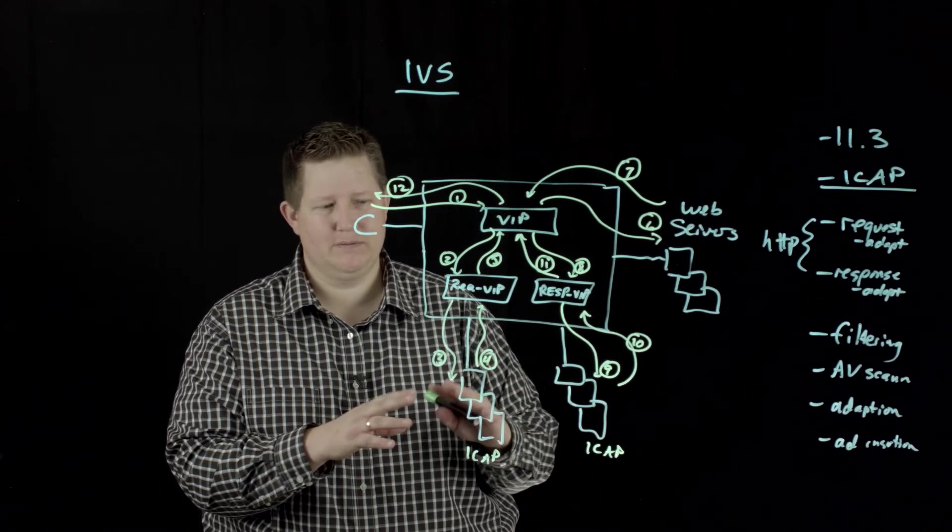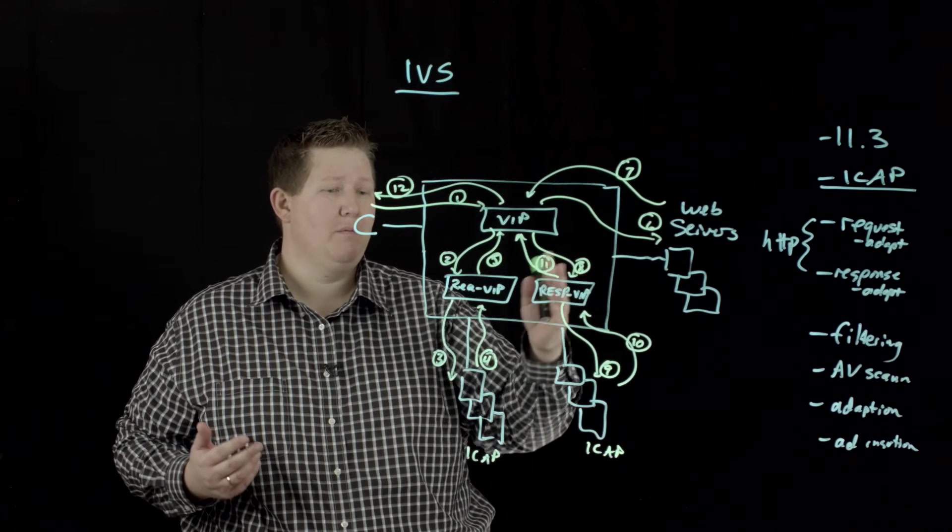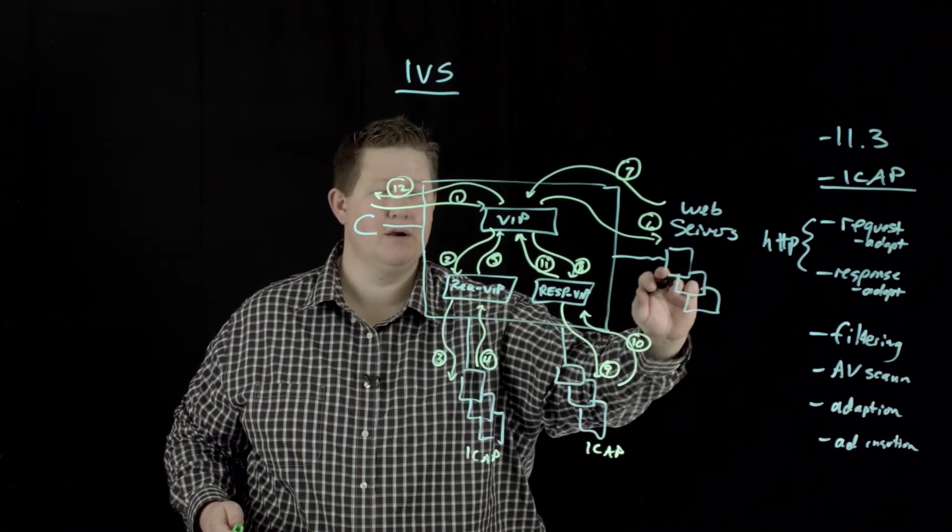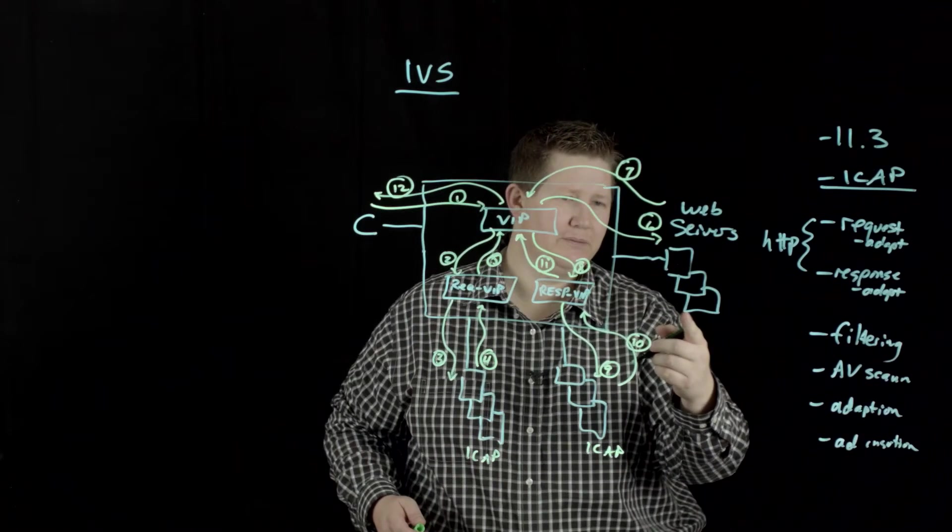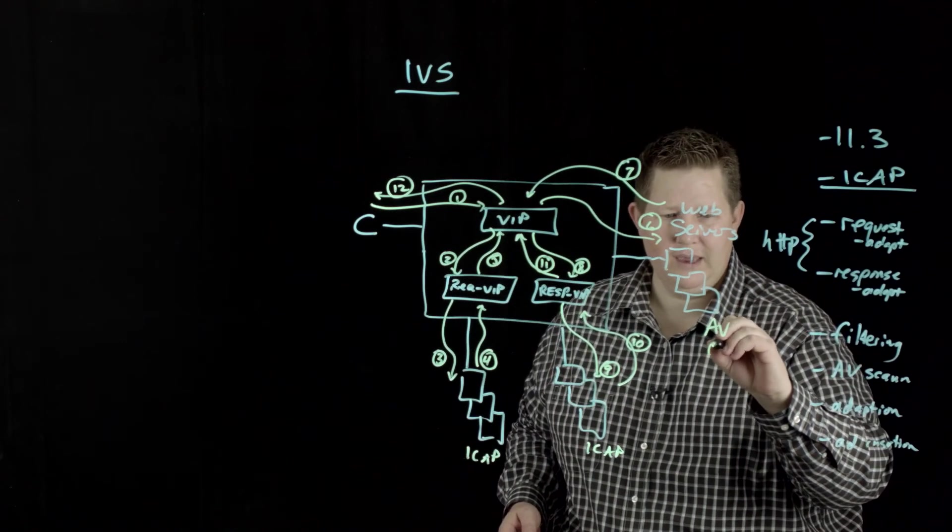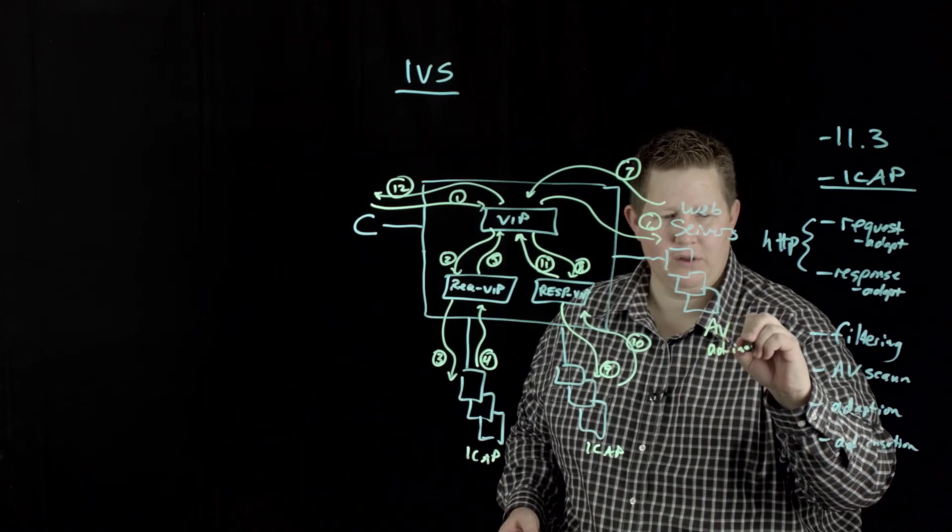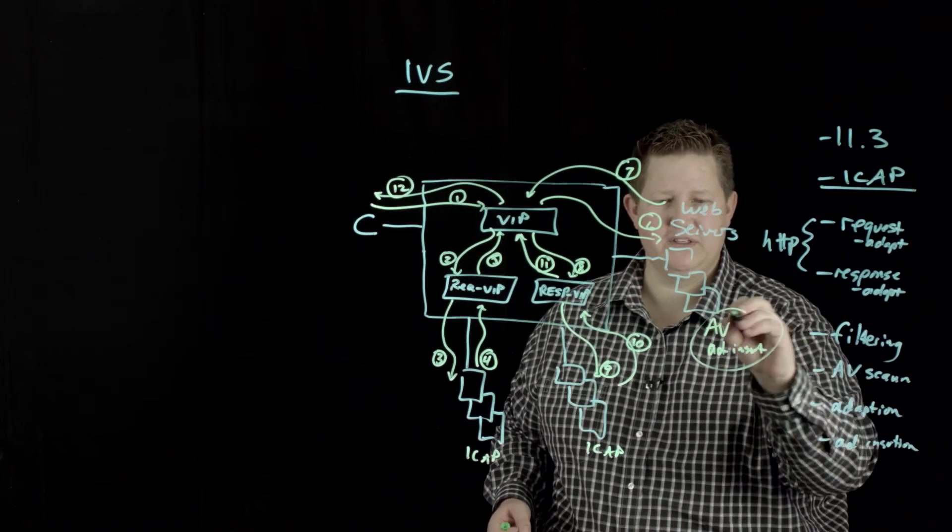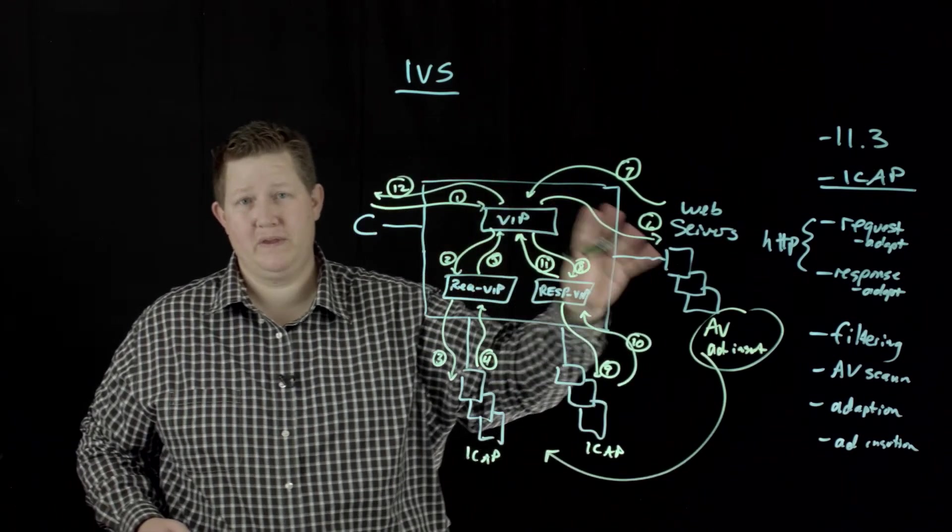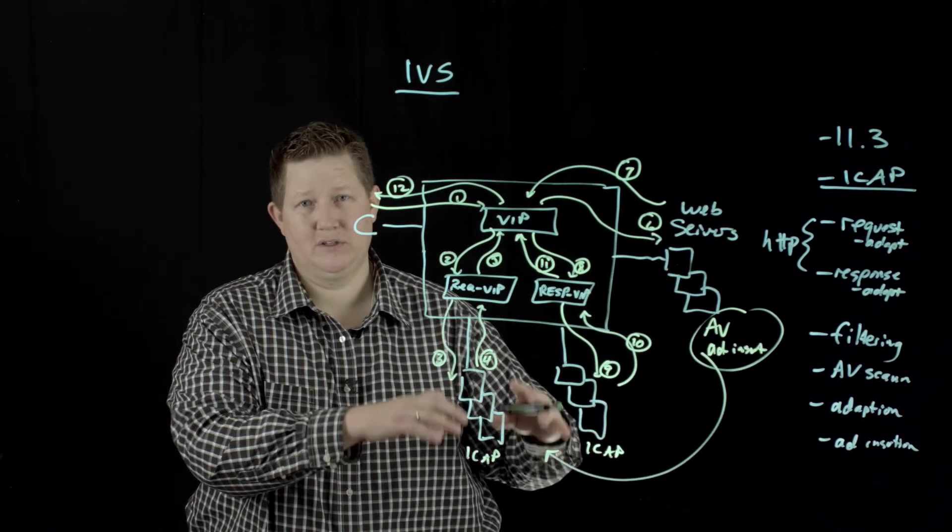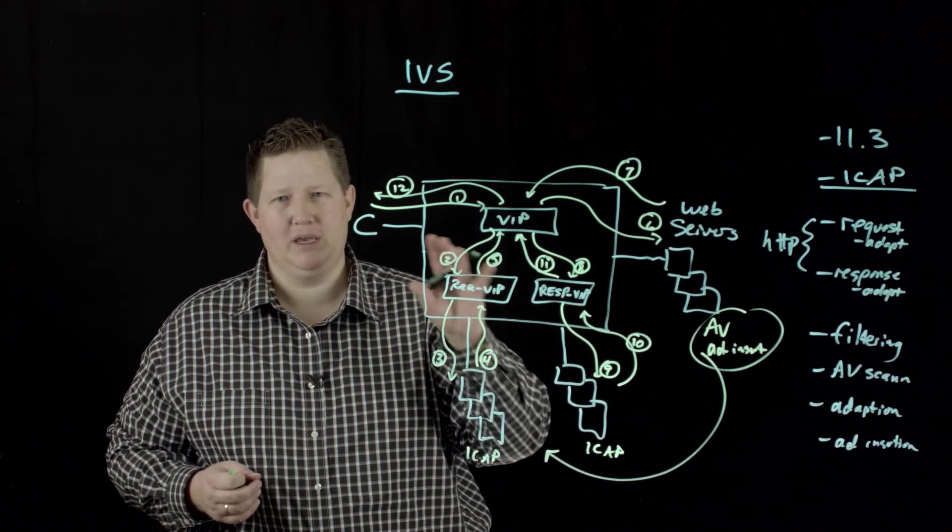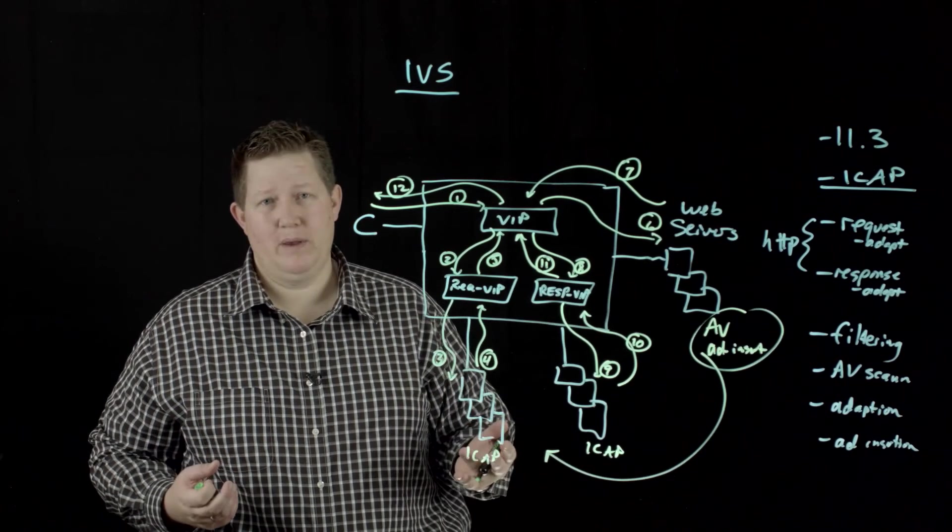You can have your ICAP servers do all that. But the primary reason this exists at all is to take the load from these web servers that would maybe traditionally do AV and ad insertion and all those other things. It's taking these services and offloading it to this layer so that the web servers can do what they're built to do, and the ICAP servers can do what they're built to do. Everything does what's most optimal to get your clients served in the best way possible.